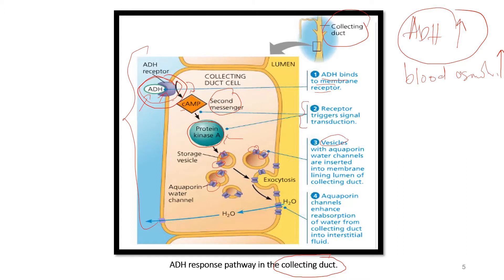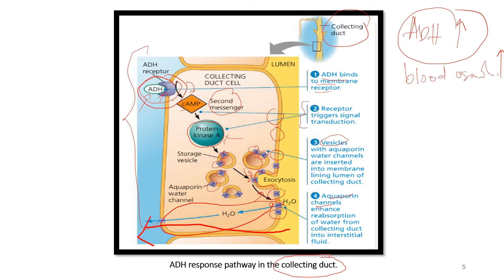Activation of protein kinase A causes vesicles with aquaporin water channels to be inserted into the membrane. You can see how these vesicles are fused with the membrane, causing aquaporin to be present on the membrane lining the lumen of the collecting duct. These aquaporin channels then enhance water reabsorption from the lumen of the collecting duct to the interstitial fluid, causing blood osmolarity to return to normal.